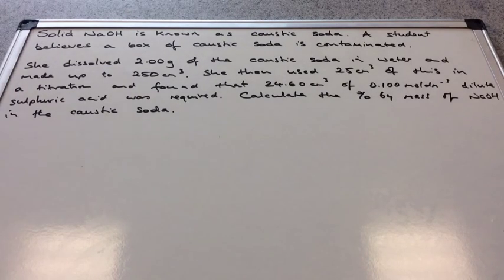I'm going to use this question. We're told that solid sodium hydroxide is known as caustic soda, a nugget of information for your general knowledge. A student believes that a box of caustic soda is contaminated, meaning the chemicals inside aren't just sodium hydroxide.